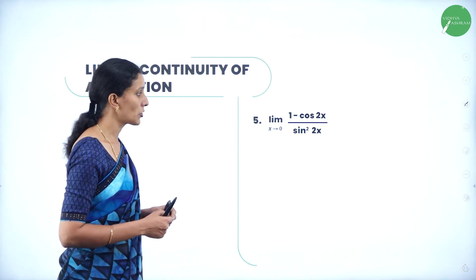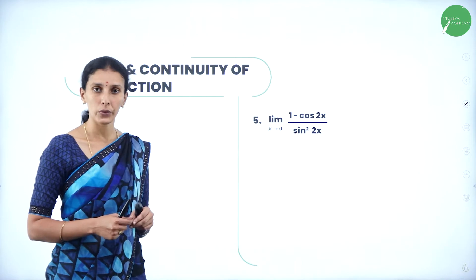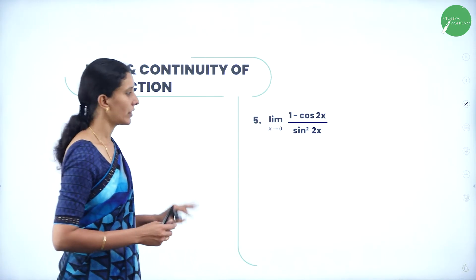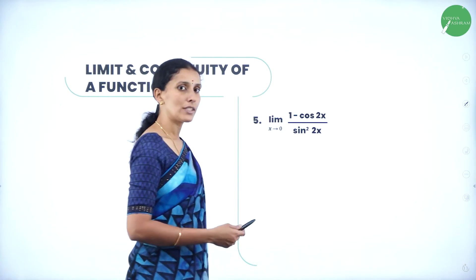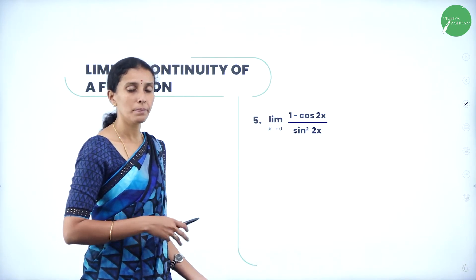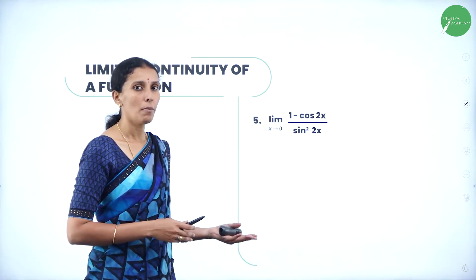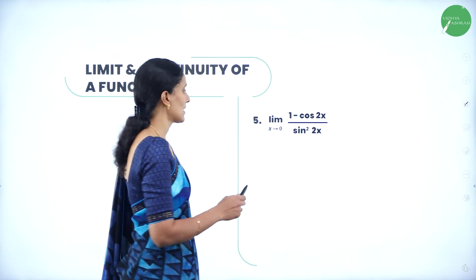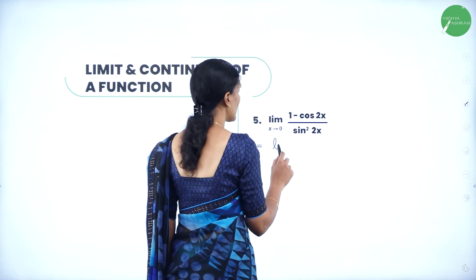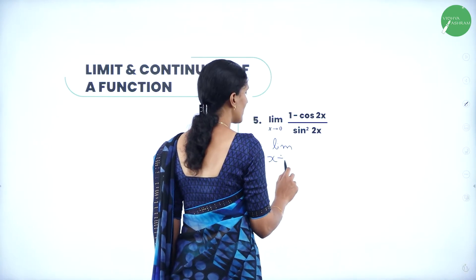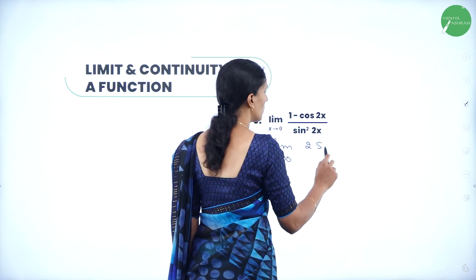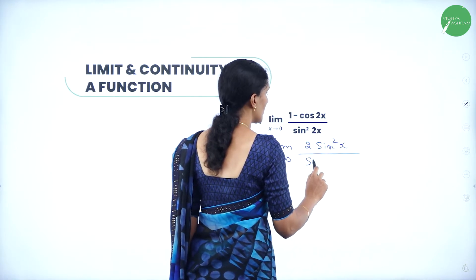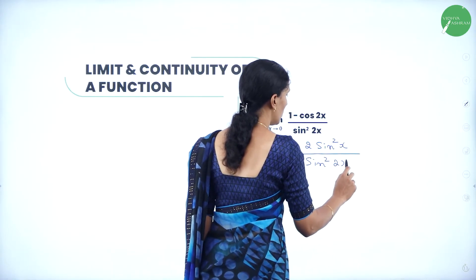Question number 5: limit of (1 − cos 2x) / sin²2x as x tends to 0. Since we have cosine and sine, let us convert everything with sine. Using the multiple angle formula: 1 − cos 2x = 2 sin²x. So the expression becomes: limit as x→0 of 2 sin²x / sin²2x.